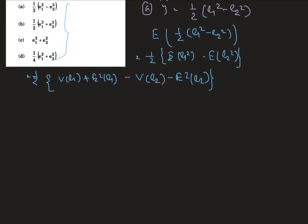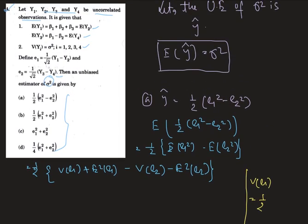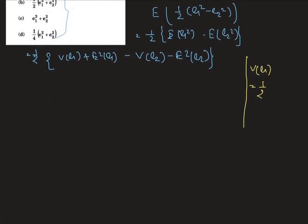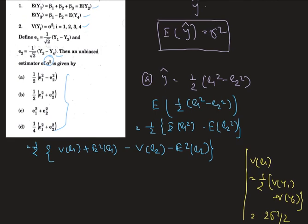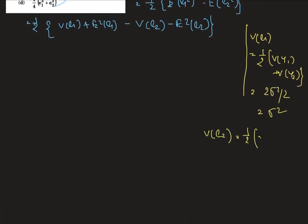Var(e1) = (1/2)[Var(y1) + Var(y2)]. Since Var(y1) = Var(y2) = σ², this gives 2σ²/2 = σ². Similarly, Var(e2) = (1/2)[Var(y3) + Var(y4)] = σ², since Var(y3) = Var(y4) = σ².